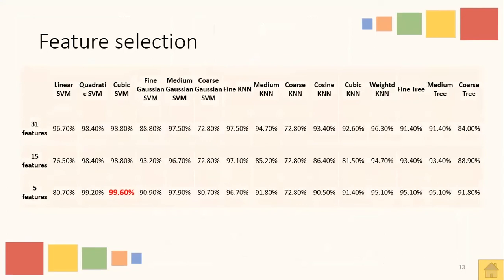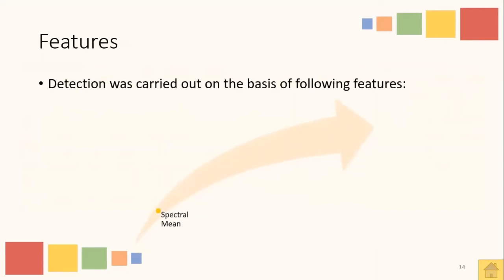For a signal classification system to exhibit better performance, feature extraction plays a critical role. Considering this, we made extensive experimentation to figure out a powerful feature vector, and we arrived at a feature set of five features starting from a feature vector of 31 features. It can be seen that the maximum accuracy achieved is 99.6% with five features and cubic SVM. These features include spectral mean, spectral skewness, spectral kurtosis, spectral energy, and log energy.